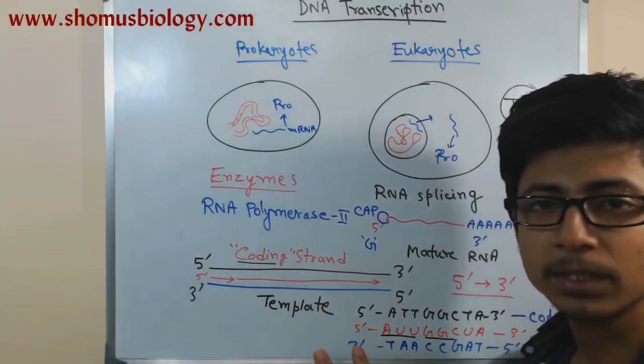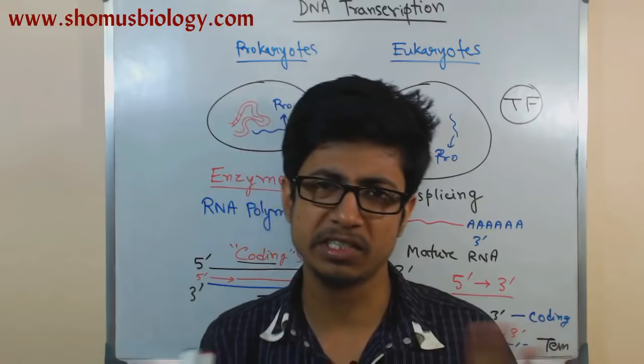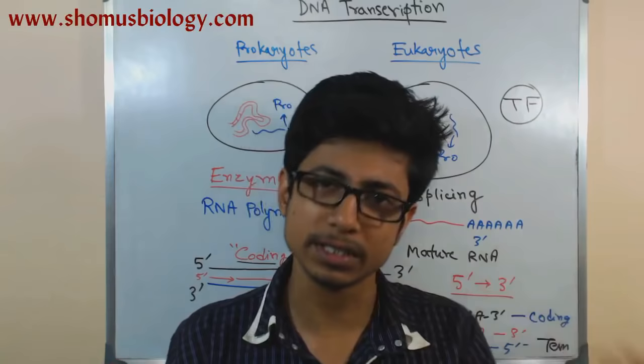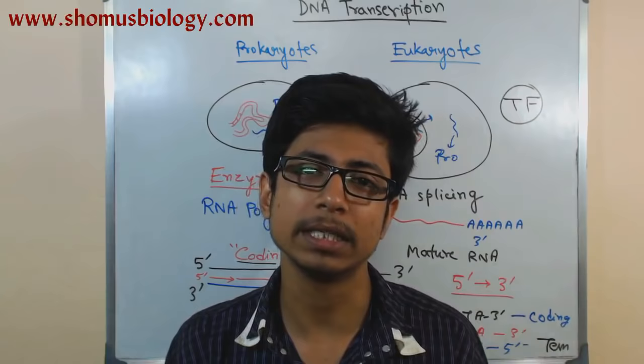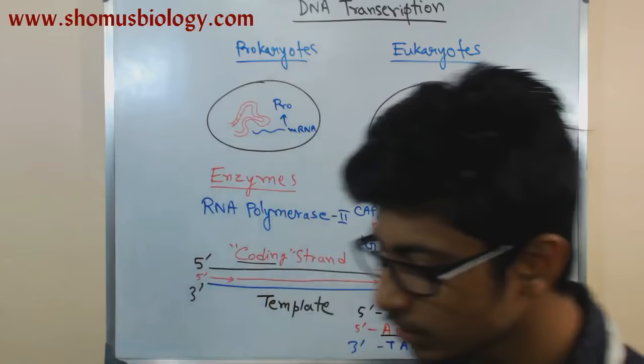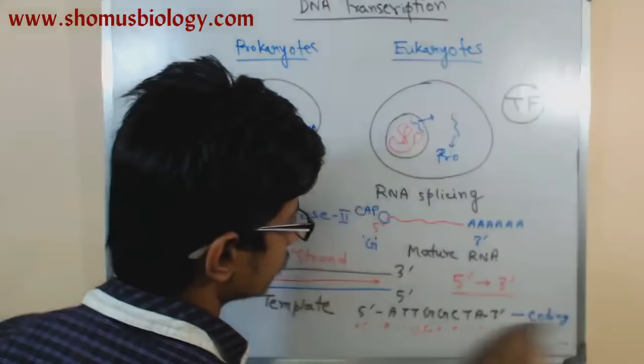This is a very important concept that many people get wrong. A simple mnemonic: just remember 'CT' — C for coding (upper strand) and T for template (lower strand). The template strand is used by RNA polymerase to synthesize the RNA. The coding strand is called coding because its sequence is the same as the RNA sequence that does the actual coding in the body.